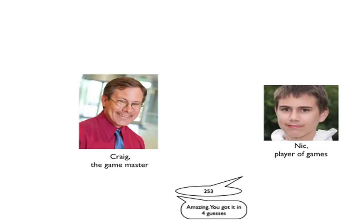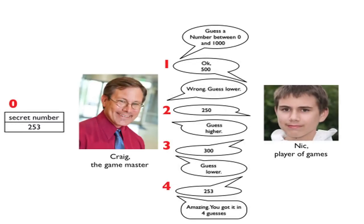We're going to create applications that allow users to play this guessing game. The computer will act as the game master and the player will act as the player of games. Let's explore a little bit more of what we did here in this game. Before the game started, Craig, the game master, created at random a secret number between zero and a thousand and hid that from Nick, the player.